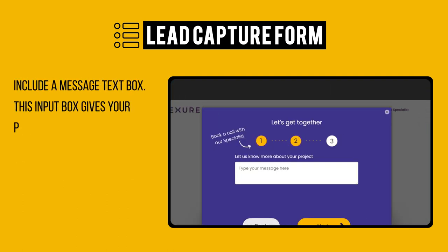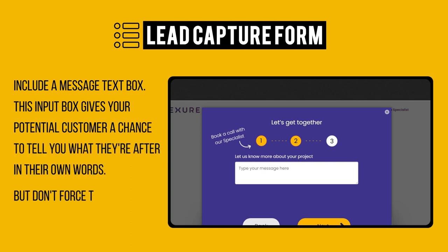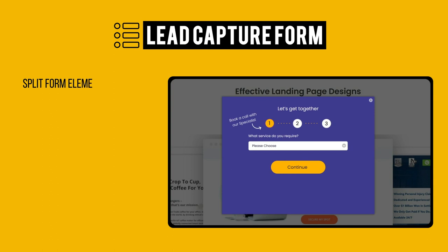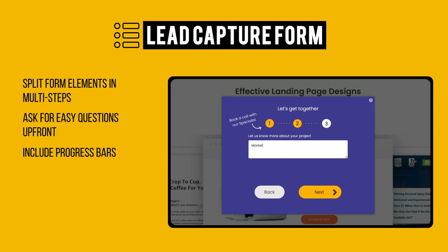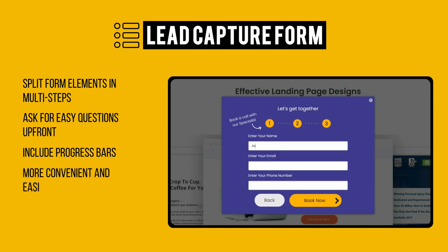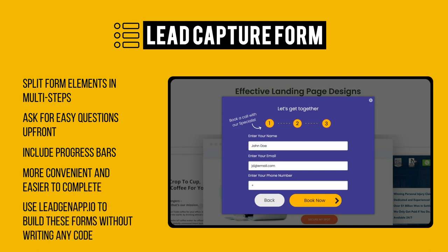Include a message text box — this input box gives your potential customer a chance to tell you what they are after in their own words, but don't force them to fill it in. Split form elements into multi-steps: ask for easy questions upfront and include progress bars to let visitors know exactly how far along they are, making it more convenient and easier to complete. You can use a tool like leadgenapp.io to build these forms without writing any code. Do not enable CAPTCHAs or annoying puzzles that users have to solve to fill a form, as it will turn off visitors who want to get straight into business.